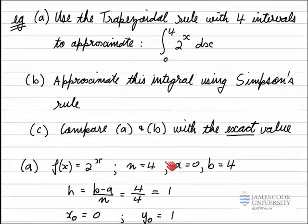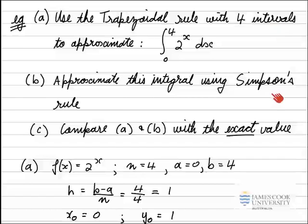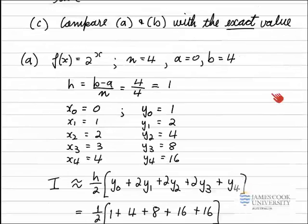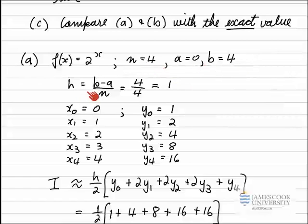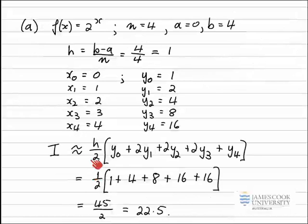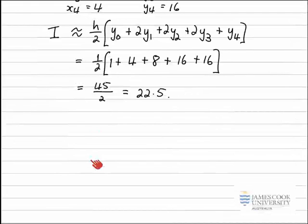Moving on to part B, I need to approximate the same integral with the same number of intervals using Simpson's rule. I already have N, A, B, H, the x values, and the y values from part A. The only difference is that I use a slightly different combination of the y values for Simpson's rule.